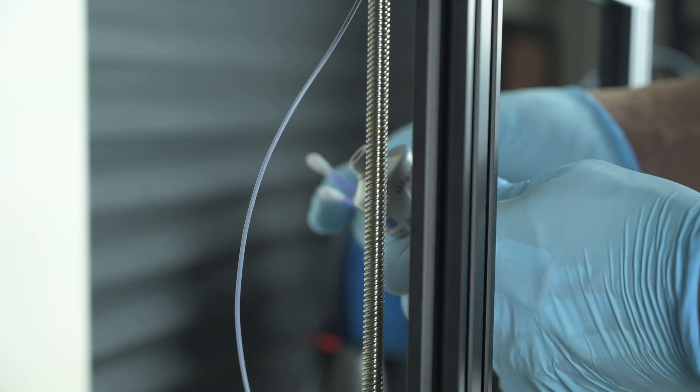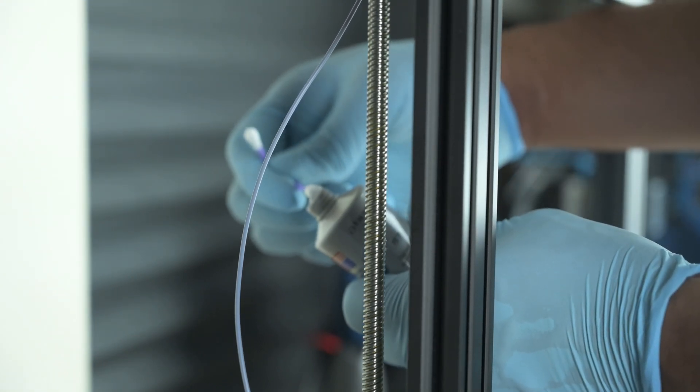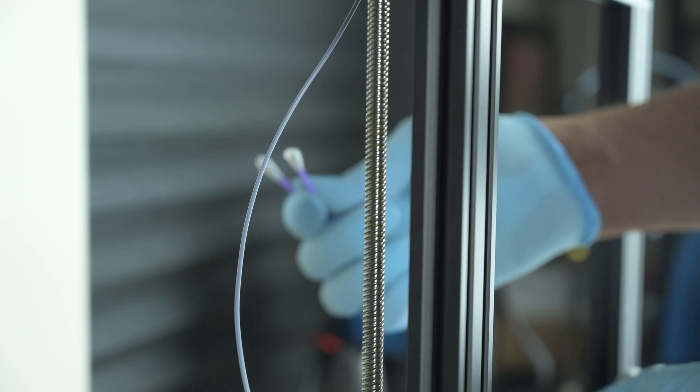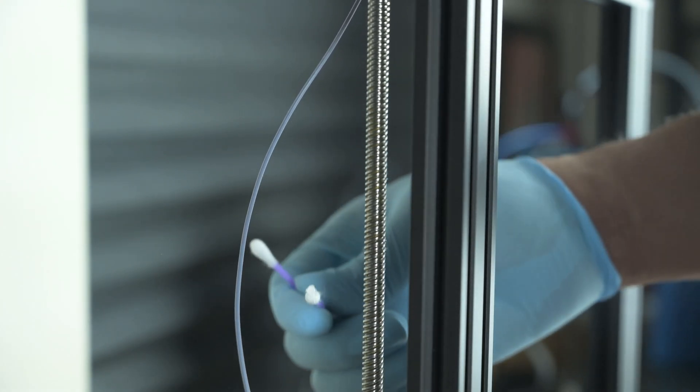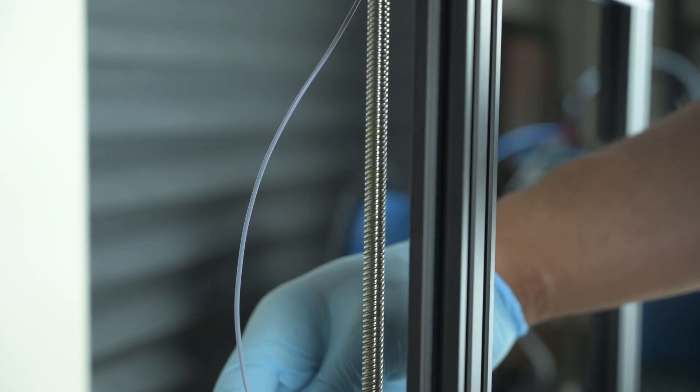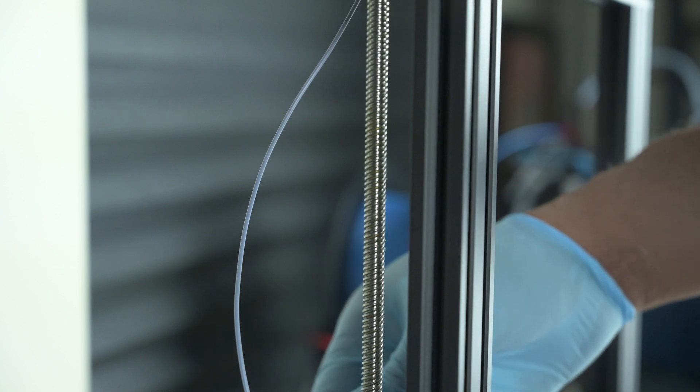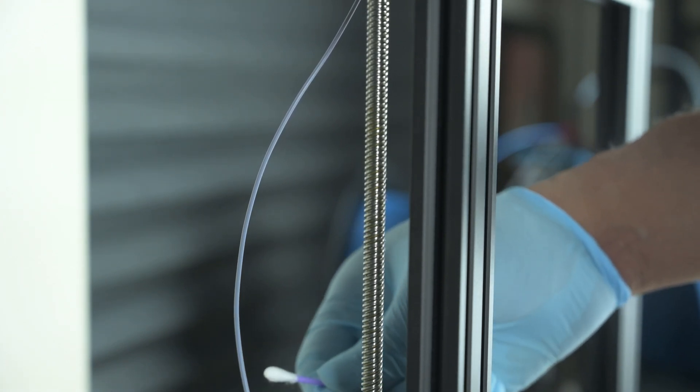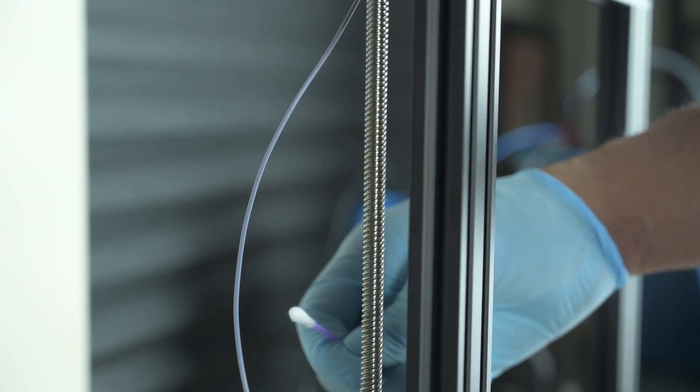Then we're just going to take a bit of grease and dab it here onto our Q-tip. And then we're just going to apply it in various areas across our rod. So let's do that.